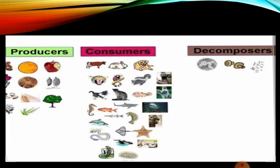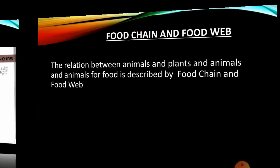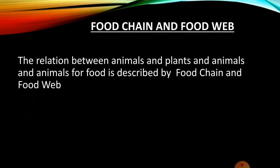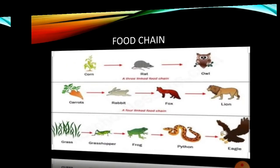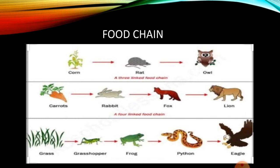In the ecosystem there are different plants, different animals, and bacteria and fungi. The food chain and food web describe the relation between animals and plants, and between animals and other animals, for food. This relationship is referred to as the food chain.